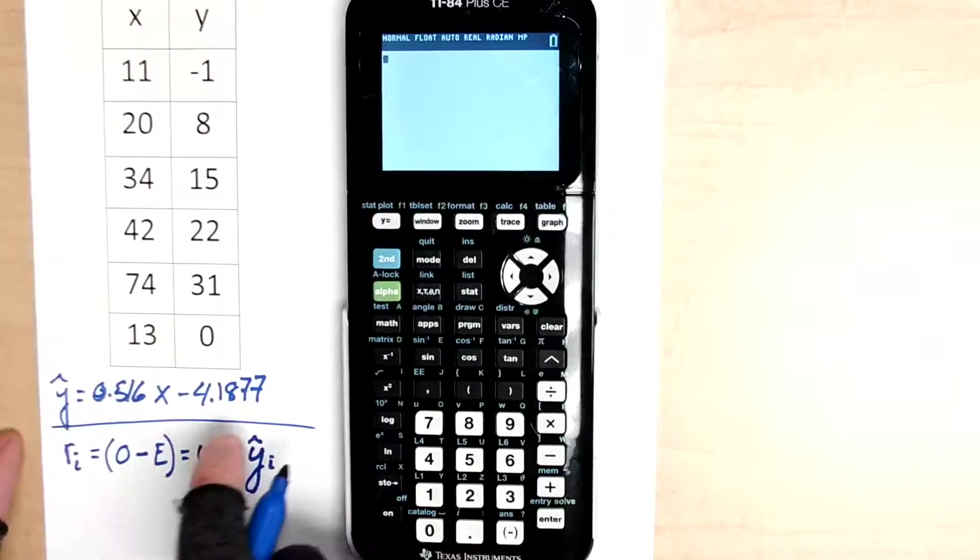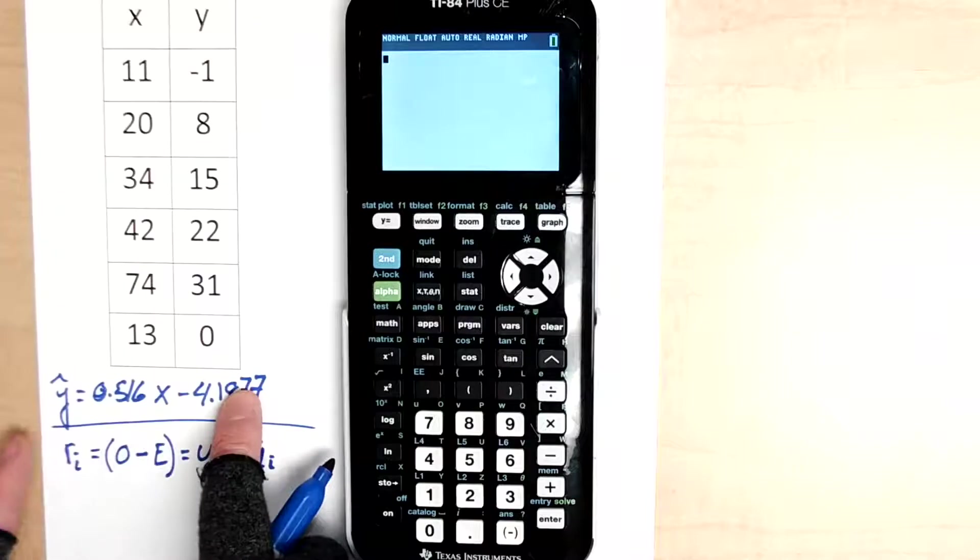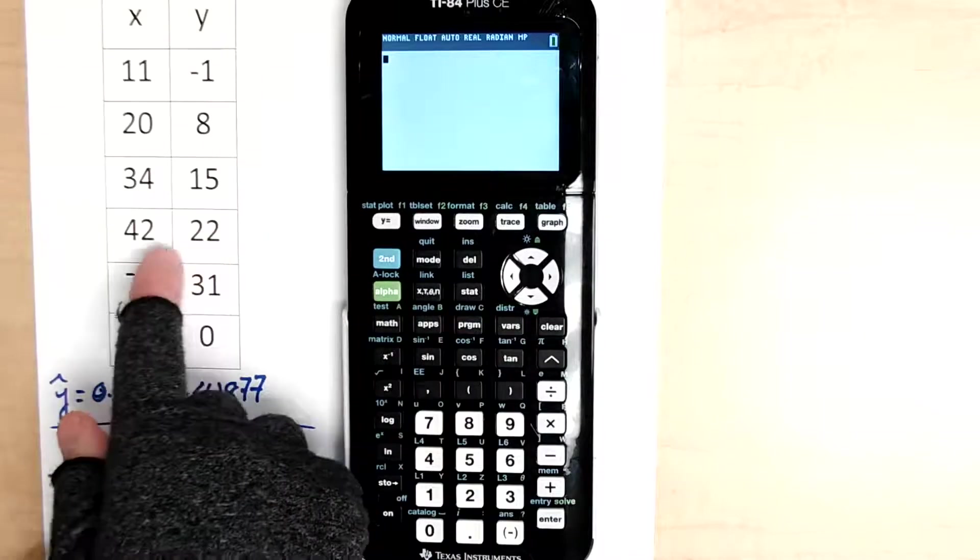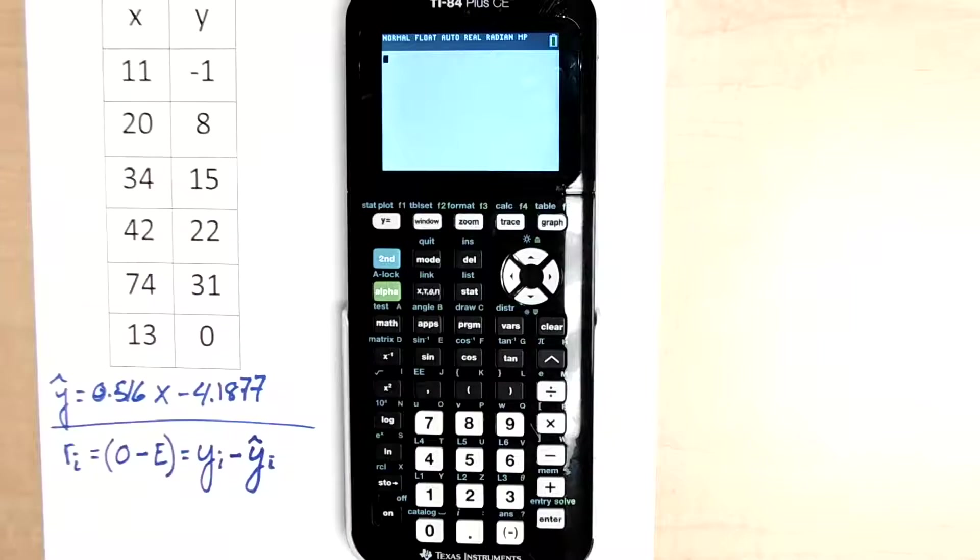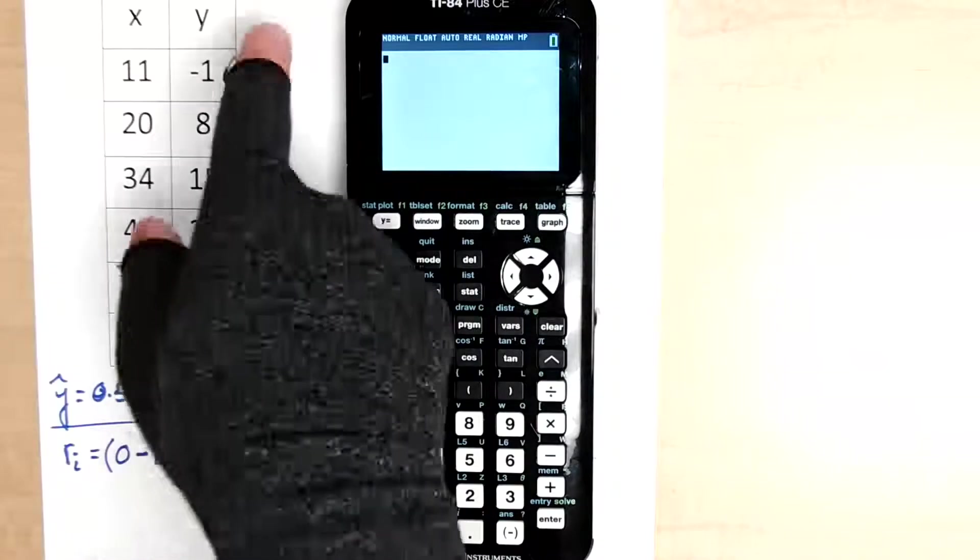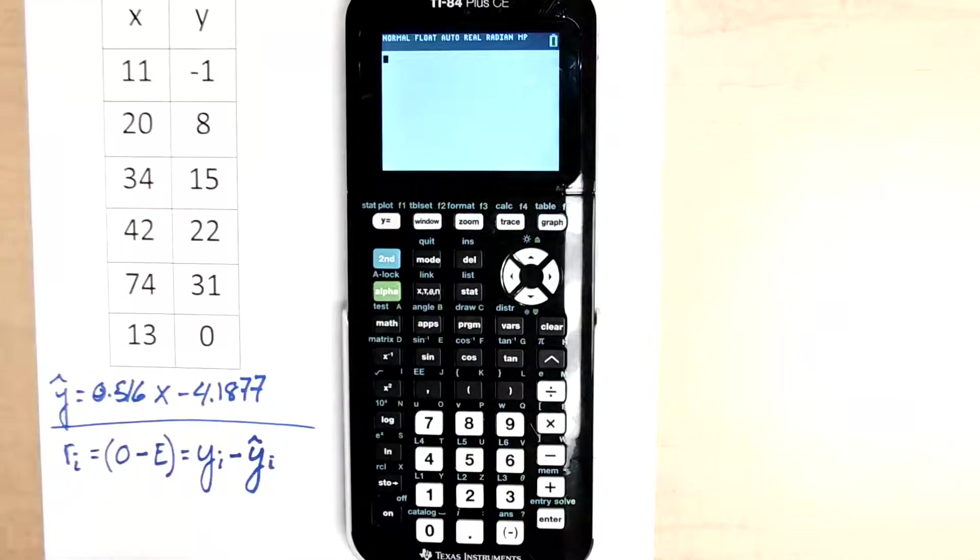let's say if I had 42, 22 again, I would still need to repeat that process. Or maybe I had 42 comma 21 as my other point. I would need to do this process for every single observed y value I have, I would need to find the expected y value.